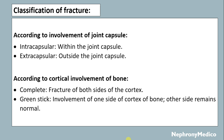Classification of fracture according to involvement of joint capsule: intracapsular and extracapsular. According to cortical involvement of bone: complete fracture, where there is fracture of both sides of the cortex; incomplete fracture, where there is involvement of only one side of the cortex while the other side remains normal.